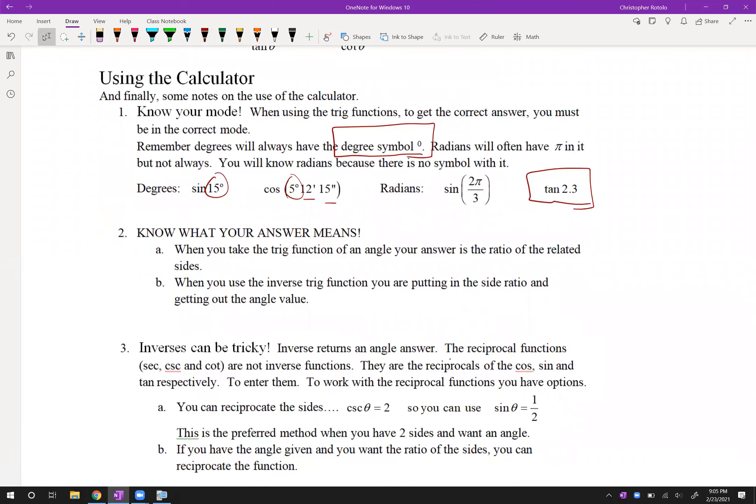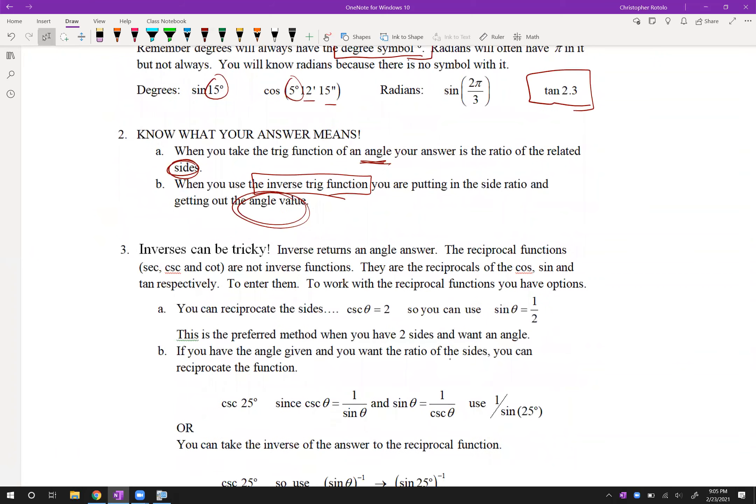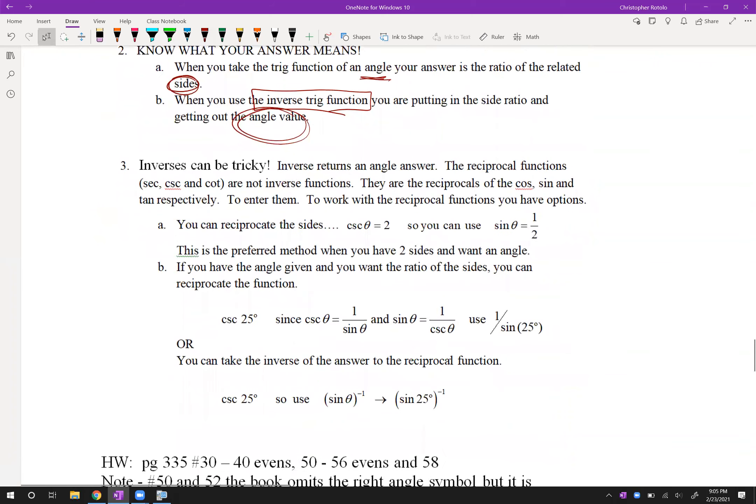What do we got? So when you take the trig function of your angle, your answer is the ratio of related sides. Okay, so if you do a trig function and you put an angle in it, that means we're finding one of the sides. And if you use an inverse trig function for what we're doing, you're finding an angle. Okay, so you're going to find a side versus an angle. Okay, inverses are always going to be angles.